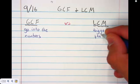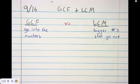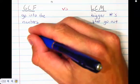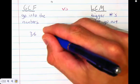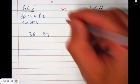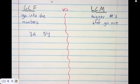We're going to find the GCF and LCM of two numbers: 36 and 54. We're going to do this twice so hopefully you see the difference between the two.